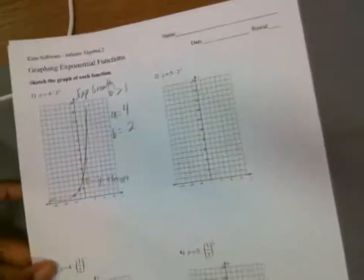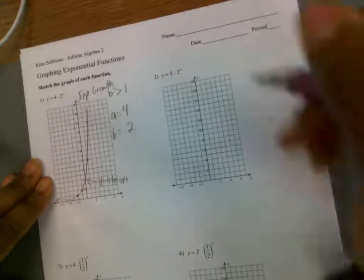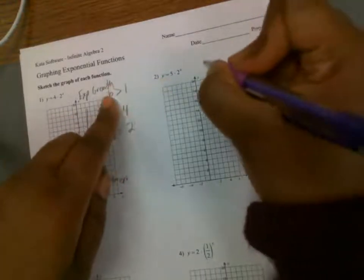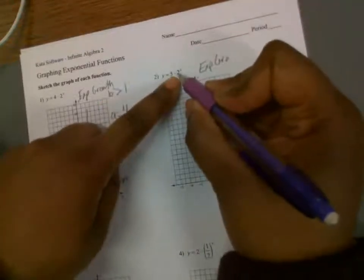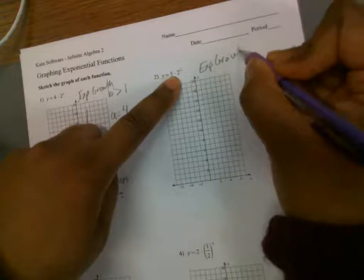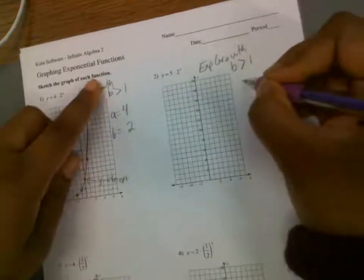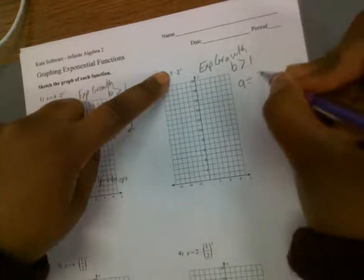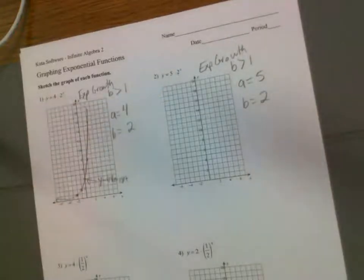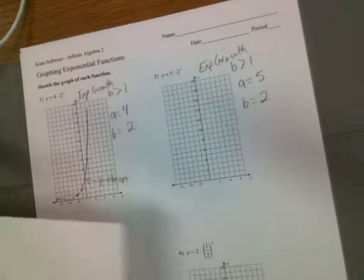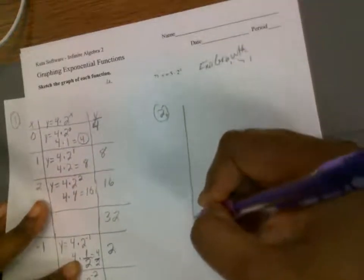Let's look at number 2. Same thing. I'm going to go ahead and say this is exponential growth. I know it's exponential growth because b is greater than 1. My a, or y-intercept, is 5. My b, my common ratio, is 2. Now I'm going to create a function table.